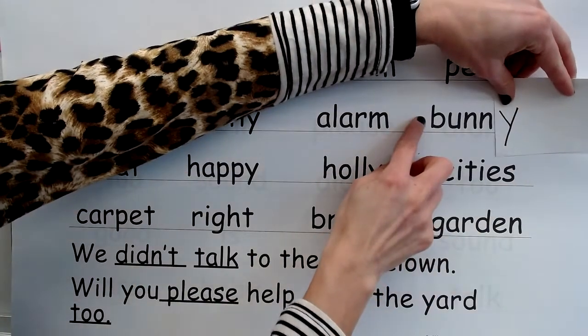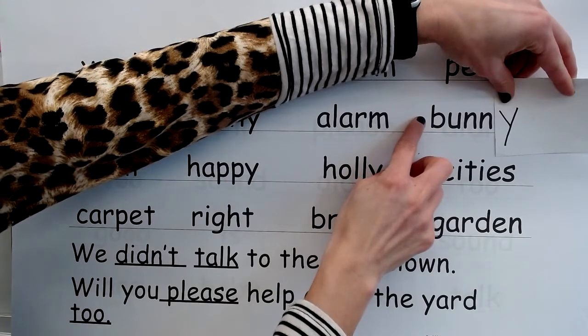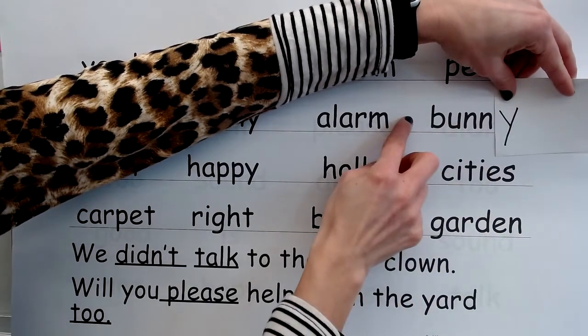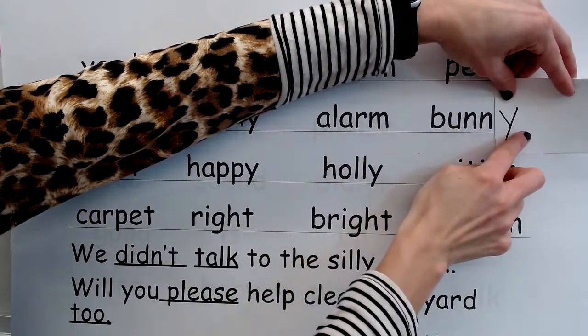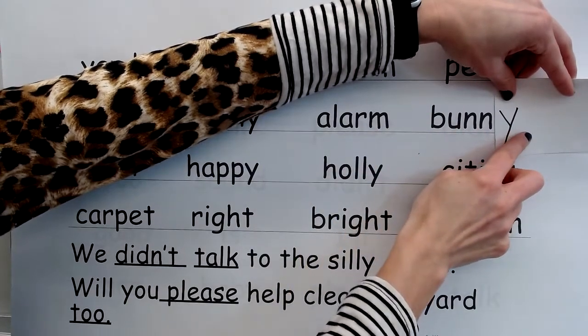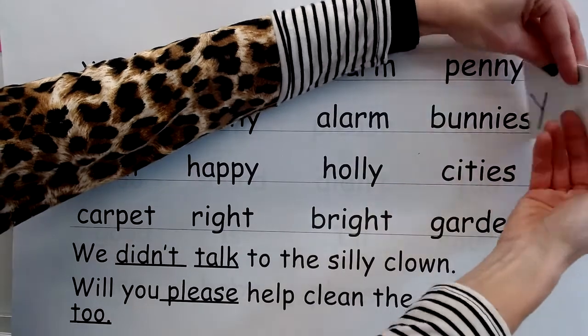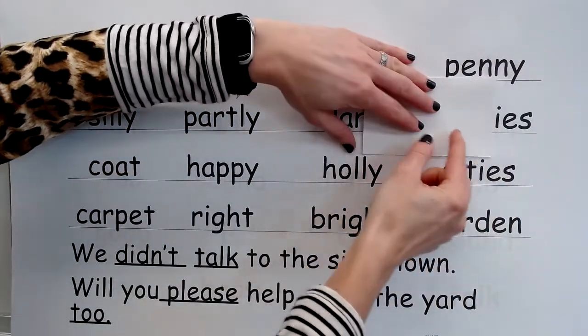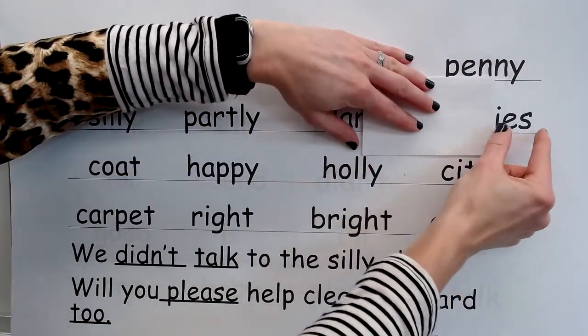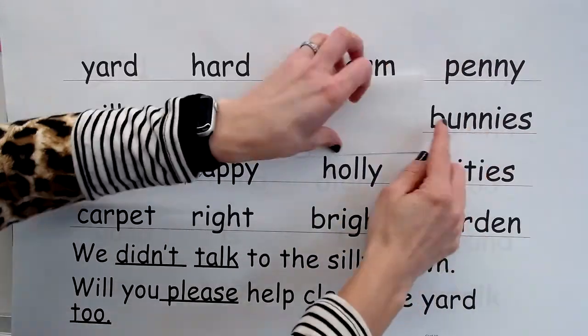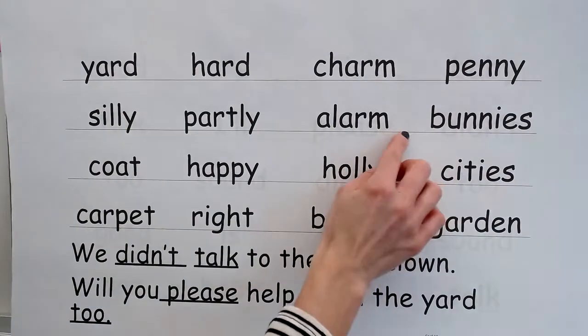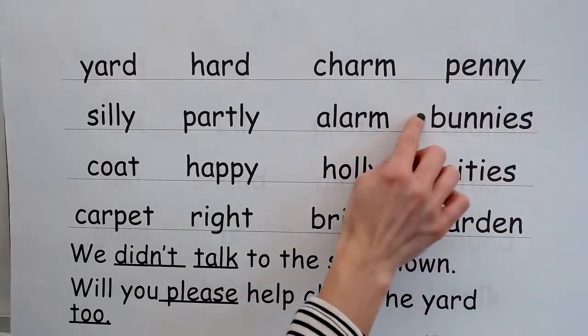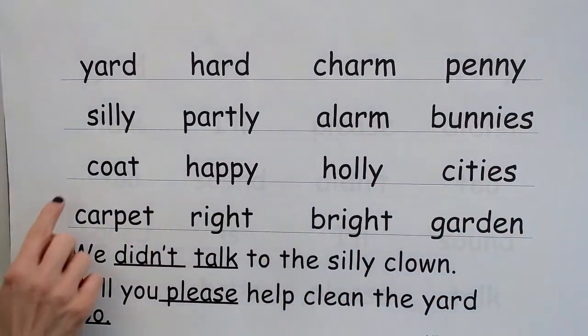Two-syllable word: sound — E, word — bunny. Yes, bunny. Change Y to I, add E-S. Ending — E's. New word — bunnies. Yes, bunnies.